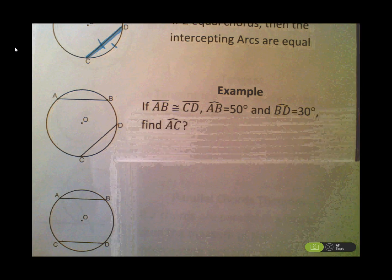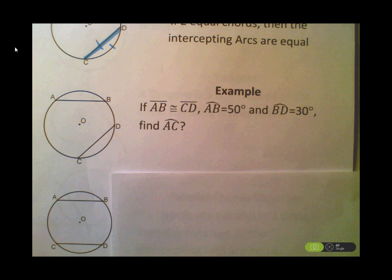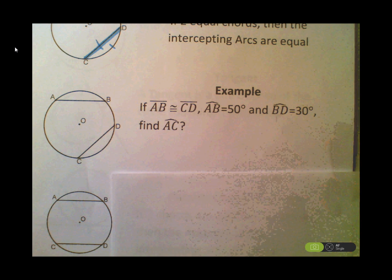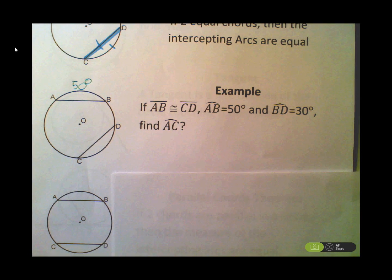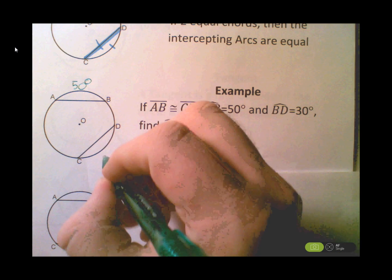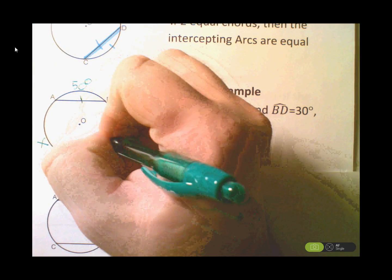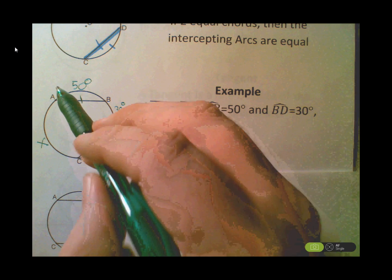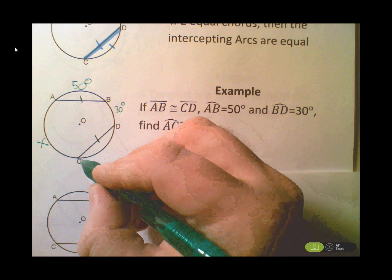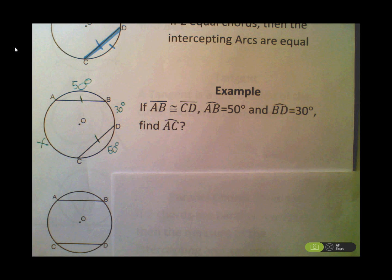Let's do an example. I know that AB is congruent to CD, arc AB is equal to 50 degrees, and arc BD is equal to 30 degrees. Find arc AC. Arc AB is 50 degrees — let's mark up our diagram first, which we always do. BD is 30 degrees. Since AB and CD are equal chords, their arcs are congruent, so arc CD is also 50 degrees.